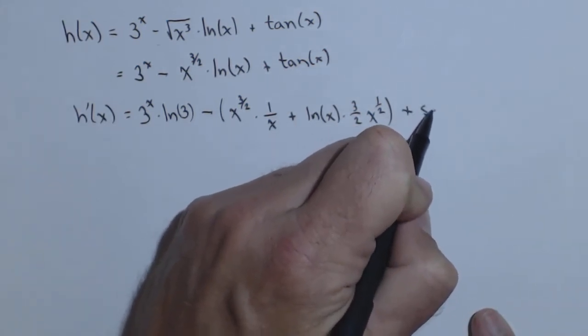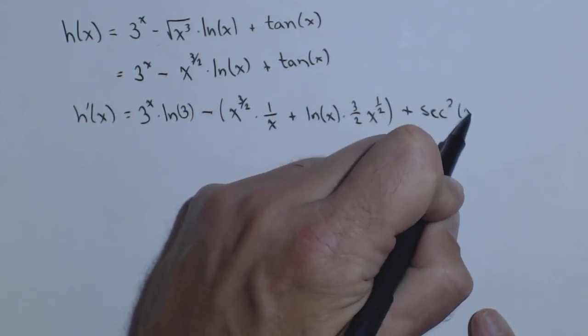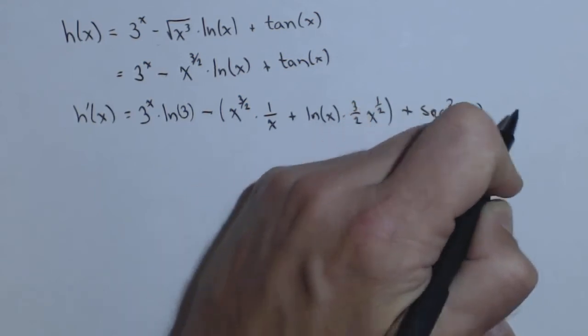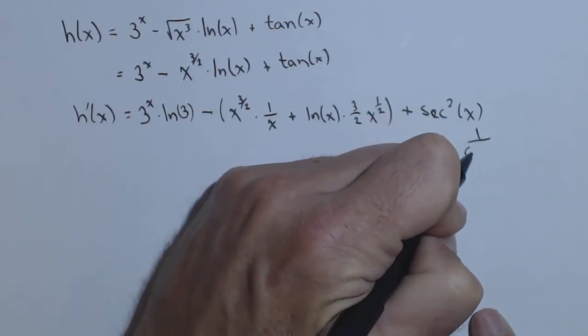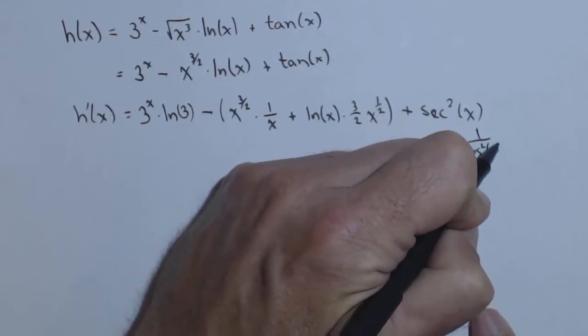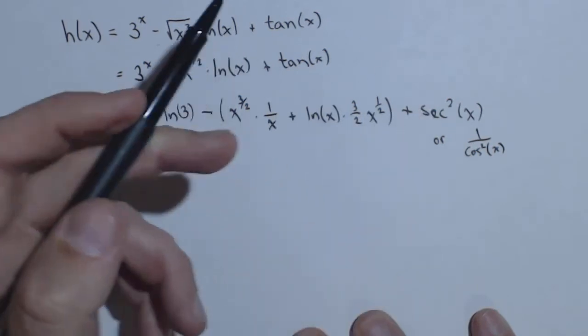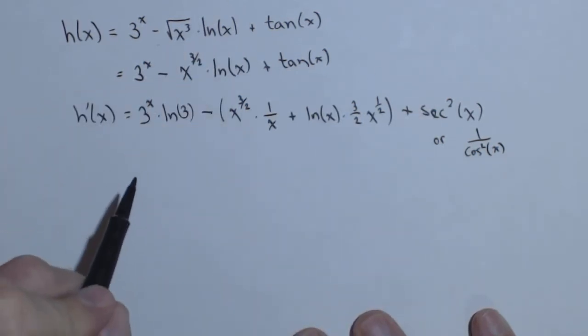Plus the derivative of tan(x), which is sec²(x), or if you wanted to, you could do 1/cos²(x) - both are correct. I just like sec²(x) because that's what I'm used to.